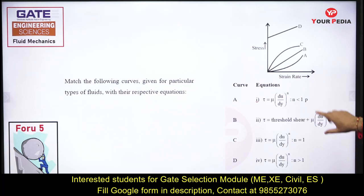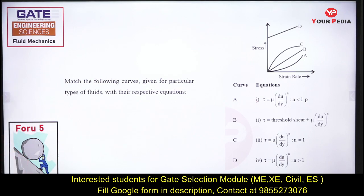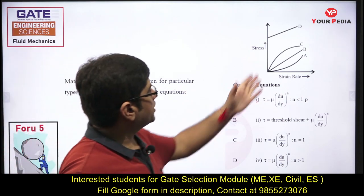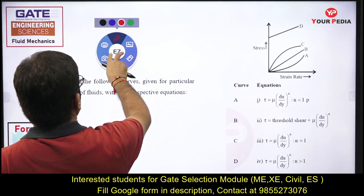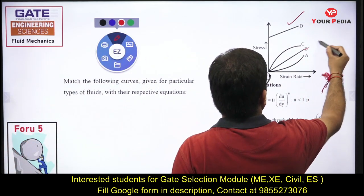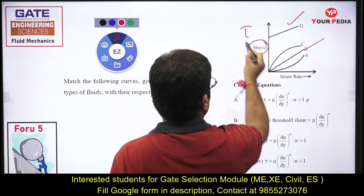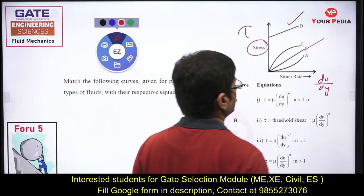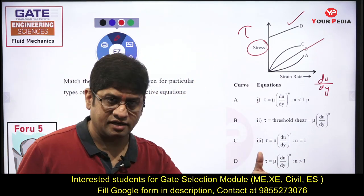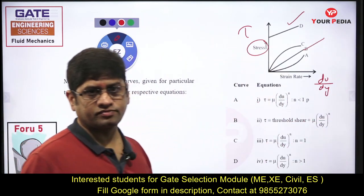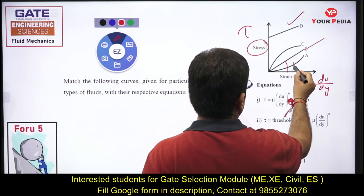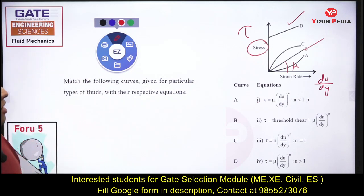Viscosity behavior of different fluids is shown in the famous τ vs. du/dy graph. For Newtonian fluid, τ is proportional to du/dy (rate of shear strain), and the slope equals the coefficient of dynamic viscosity μ. Using the power-law form τ = μ(du/dy)ⁿ: when n = 1 it is Newtonian; n > 1 is dilatant; n < 1 is pseudo-plastic.